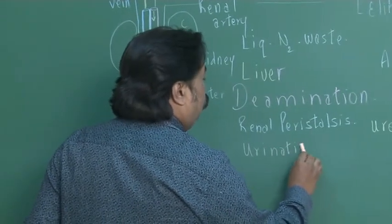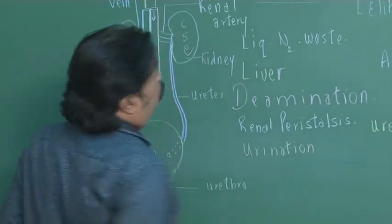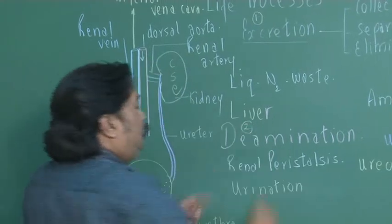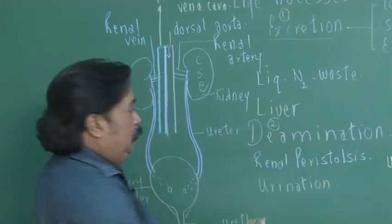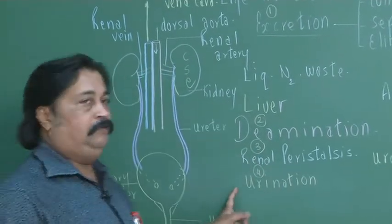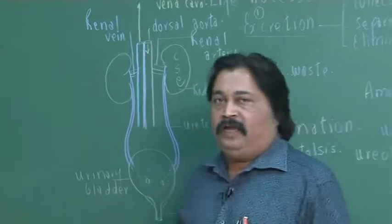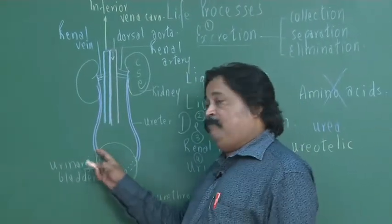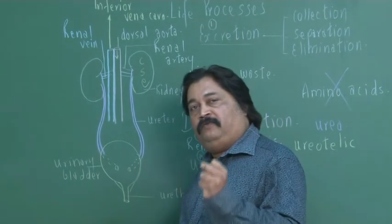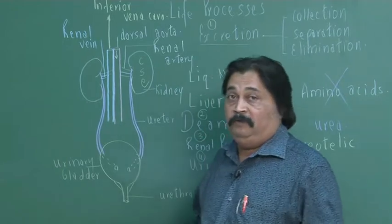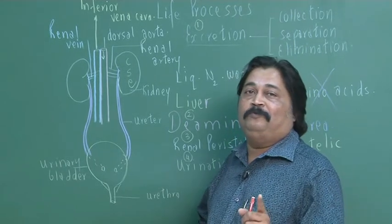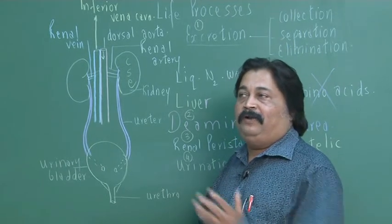It is a mechanism of voiding of the urine. We have started with excretion, then I taught you de-amination, then renal peristalsis. Then of late, we have discussed about urination. It is a voluntary action. By the way, the urinary bladder has a capacity to store around 350 to 400 ml of urine. But don't measure. It will not be exactly 350 to 400 ml. Don't think that it will be one drop more or one drop less. It depends upon the environment.